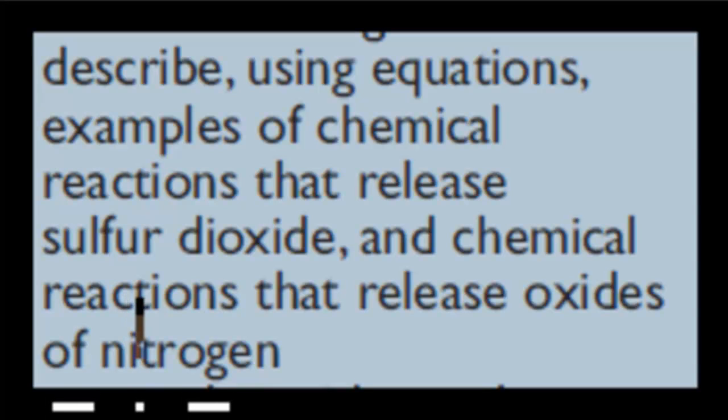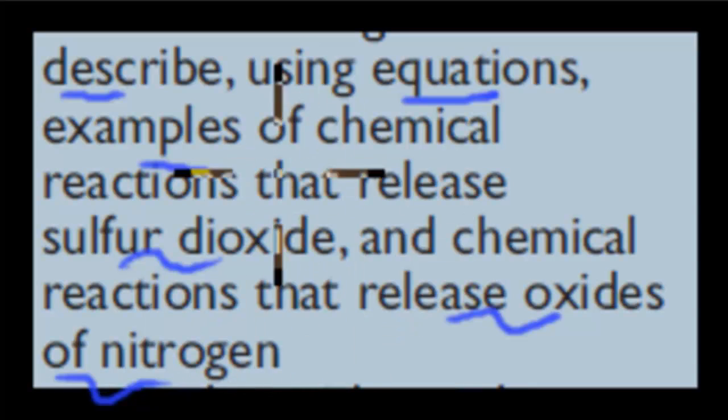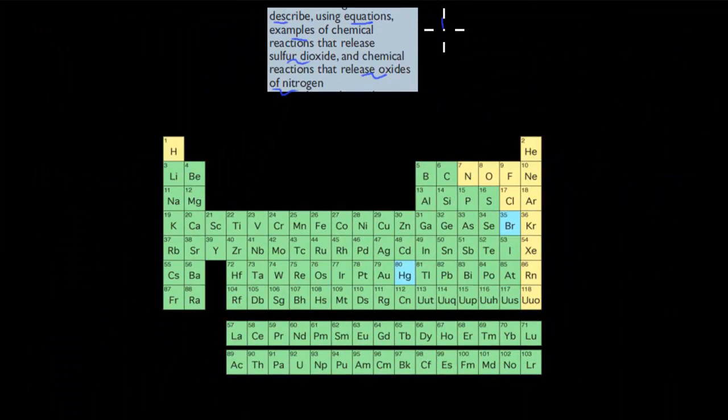In the last video, we identified some of the sources of both sulfur dioxide and nitrogen oxide when it comes to industrial and natural sources. What we're going to do today is describe some of those reactions. The dot point says, describe using equation examples of chemical reactions that release sulfur dioxide and chemical reactions that release oxides of nitrogen. So we have to describe using chemical reactions. We'll go through these in this video, and make sure to remember some of them as well.